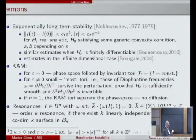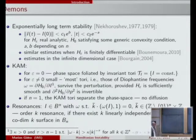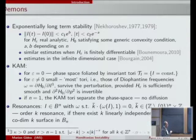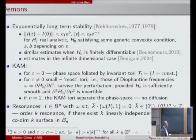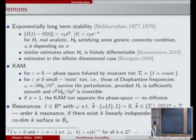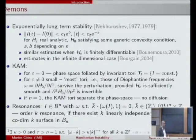So the change in action should be very small for a very long time. The constants A and B depend on N, and the Nekoroshev formulation was for analytic Hamiltonians. There are also similar estimates for finite differentiable Hamiltonians by Benettin-Nekhoroshev, and similar estimates in the infinite-dimensional case by Bambusi.